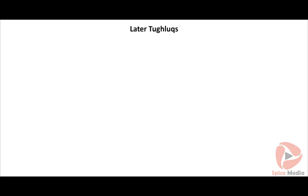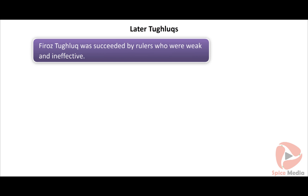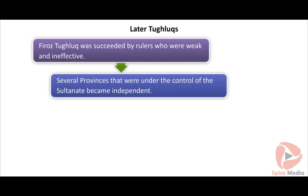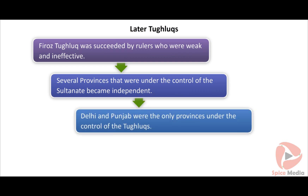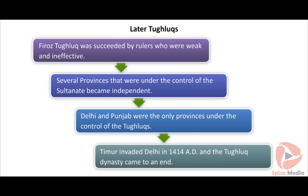Later Tughlaqs: Firoz Tughlaq was succeeded by rulers who were weak and ineffective — Giyasuddin Tughlaq II, Abu Bakshar and Nasruddin Muhammad Tughlaq. Several provinces that were under the control of the Sultanate became independent towards the end of the 14th century. Delhi and Punjab were the only provinces remaining. During the beginning of the 15th century, Timur invaded Delhi in 1414 AD and the Tughlaq dynasty came to an end.